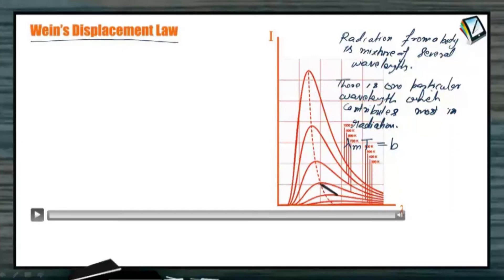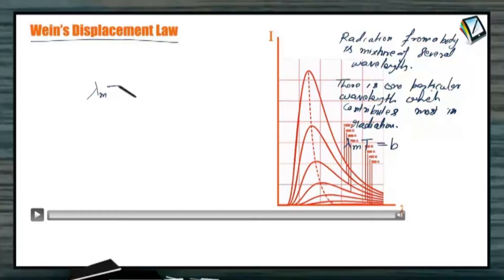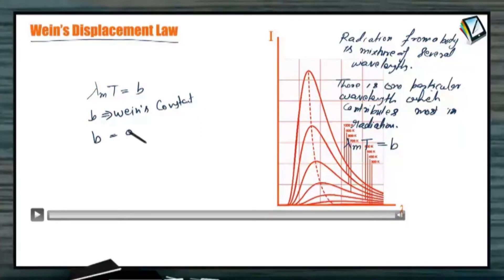These values of the wavelengths — the peak ones — for a particular temperature, say 800K, we can read the value of lambda from the lambda axis. If we increase the temperature, then lambda for that higher temperature will be less than the earlier one. So as we increase the temperature, the wavelength corresponding to maximum contribution decreases. This is lambda_M × T = B, where B is known as Wien's constant, and its value is found to be 0.288 centimeter·Kelvin.